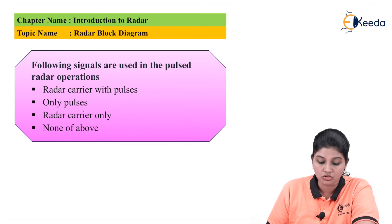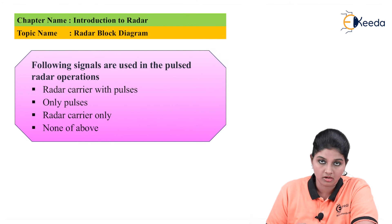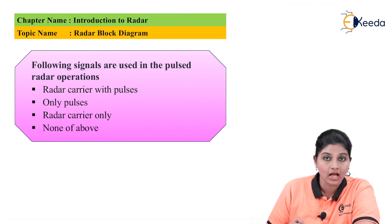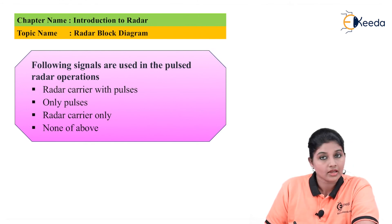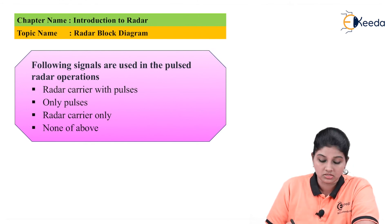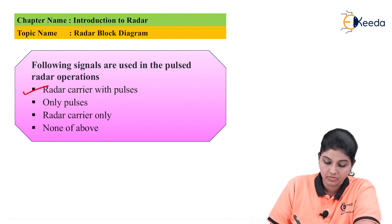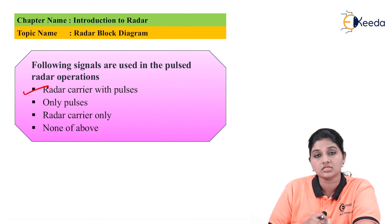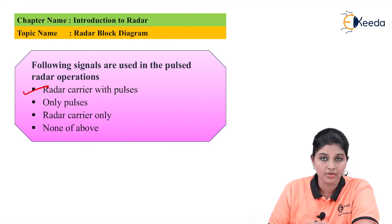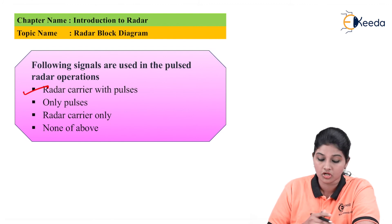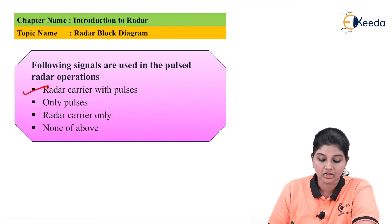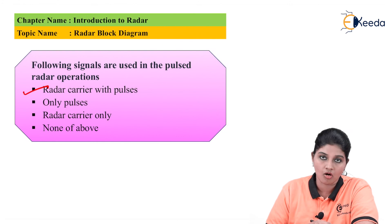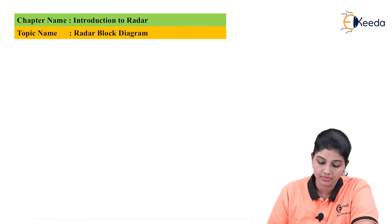The options are: radar carrier with pulses, only pulses, radar carrier only, and none of the above. The answer is radar carrier with pulses, because in the radar signal the sine wave carrier is modulated with the help of rectangular pulses generated by the waveform generator.